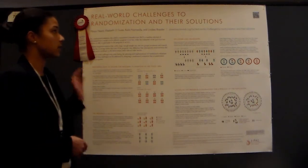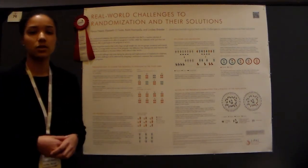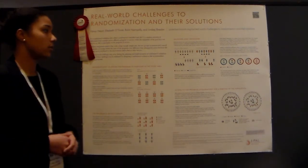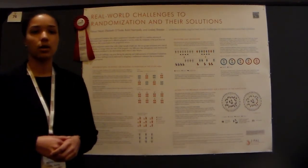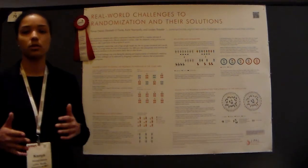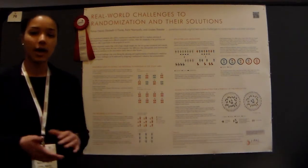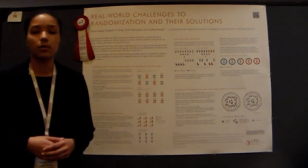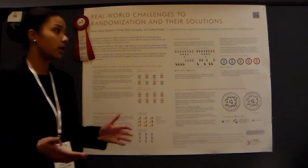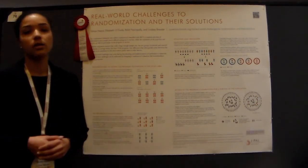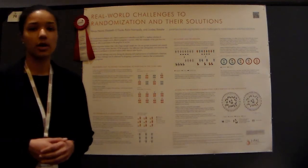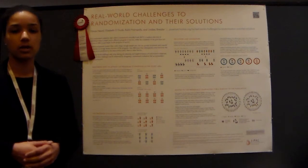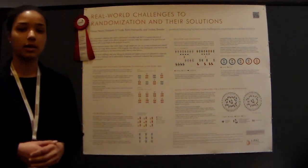What I have here today is real-world challenges to randomization and their solutions. When we're looking at programs that are trying to reduce poverty and we want to determine the impact of these programs, often the most rigorous way to do this is with a randomized controlled trial. But with randomized controlled trials come a number of challenges to implementing them, though many of these challenges can be addressed with design solutions.